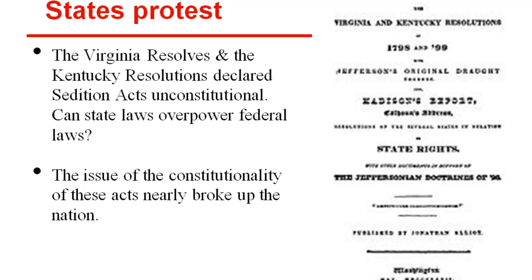The Virginia Resolves and the Kentucky Resolutions declared the Sedition Acts unconstitutional — two states rebelling against a federal mandate. The question arose: can state laws overpower federal laws? The constitutionality of the Alien and Sedition Acts nearly broke up the nation. People were so divided and felt very strongly that the First Amendment right to free speech was a very important part of our nation.